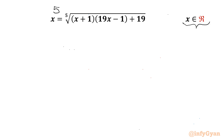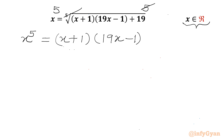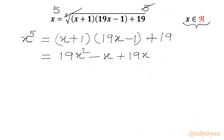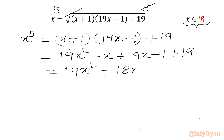Raise to power 5 on both sides. We can cancel the 5th root and power 5 from the RHS. So x power 5 will be equal to (x+1)(19x-1) + 19. Let's simplify the RHS: 19x² - x + 19x - 1 + 19, which gives us 19x² + 18x + 18.